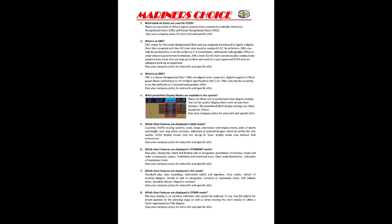What predefined display modes are available in the system? On the screen, in ECDIS you need to press the Custom button at the top right-hand corner. You will find three modes: IMO Base, IMO Standard, and IMO All. IMO Base shows the coastline, traffic routing system, scale range, orientation, display mode, unit of depth and height, own safety contour, indication of isolated danger within safe water. Display modes that remove vital information are set as base.